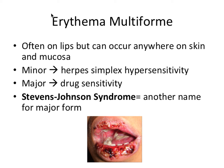Next we have erythema multiforme, which often occurs on the lips but can occur anywhere on the skin and mucosa. There's a minor form and a major form. The minor form is related to a herpes simplex hypersensitivity, whereas the major form is related to a drug sensitivity — worth committing to memory.